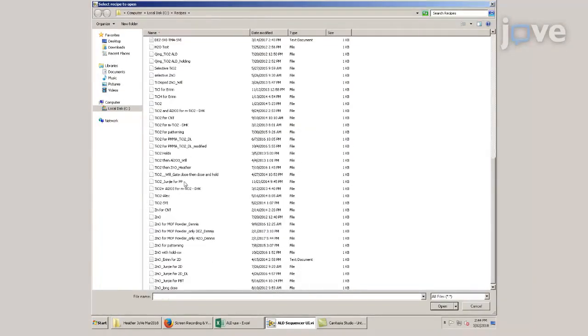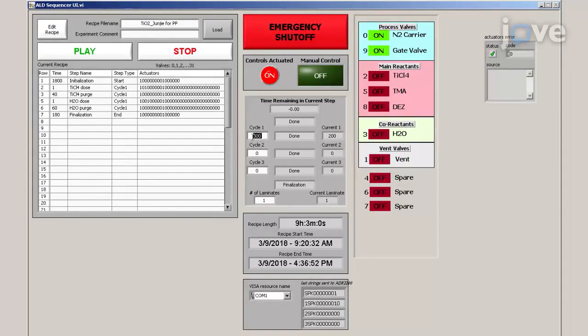Load the recipe for titanium oxide on fabrics. Set the recipe to run 300 cycles.